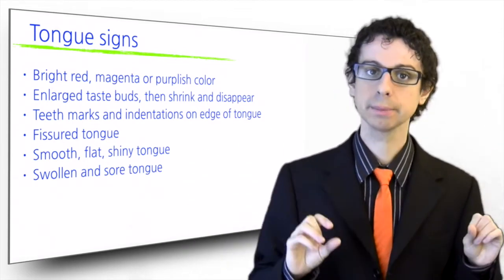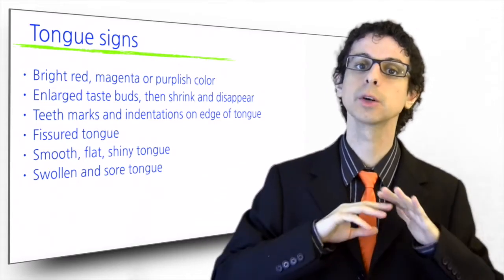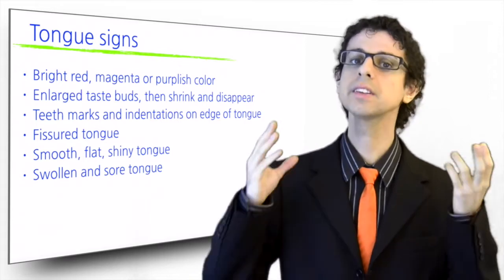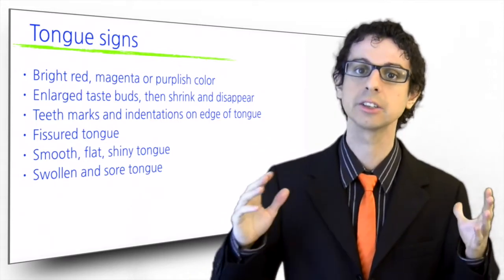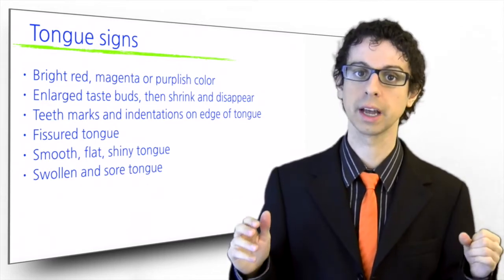If B vitamin deficiency persists, these fissures eventually disappear and the tongue becomes completely smooth. Not the silky smoothness of a healthy tongue, but a totally flat and shiny surface, oftentimes also swollen and sore.